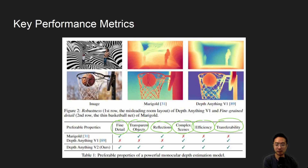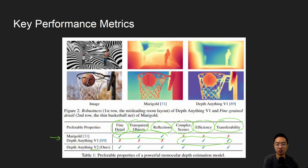Here's a comparison between Marigold and Depth Anything V1 — Marigold is good at certain things and V1 is good at certain things as well. The main goal of Depth Anything V2 is to be the best of both worlds: good at all these metrics while preserving fine details and performing well on surfaces that are hard to detect. We'll see later how it actually performs in examples and in real time.